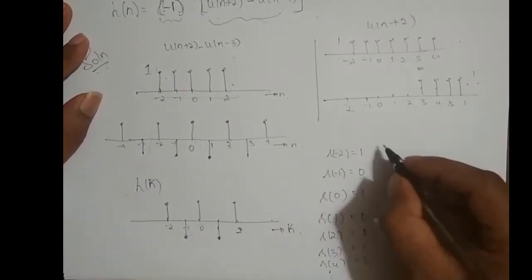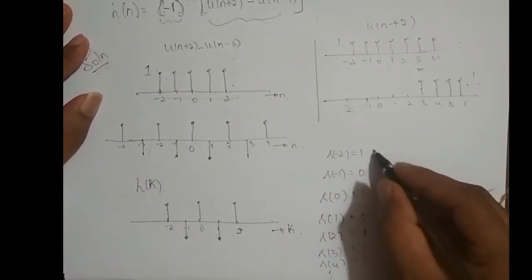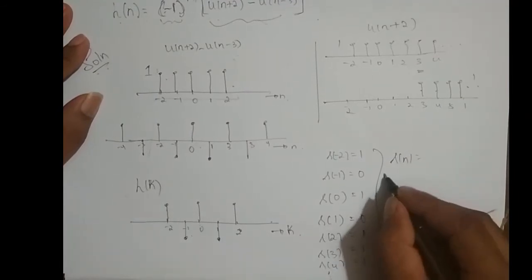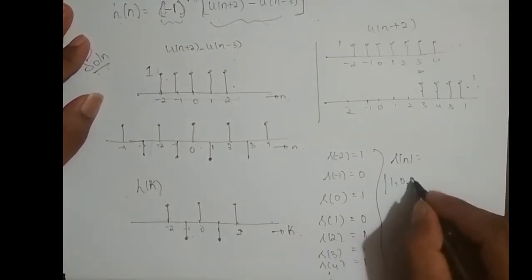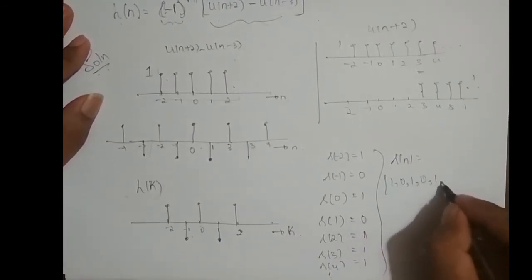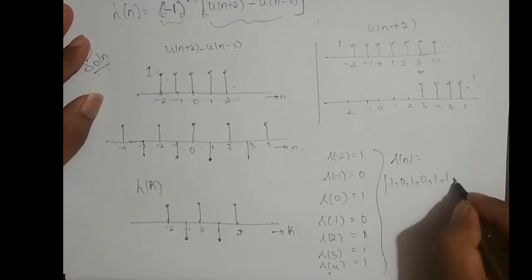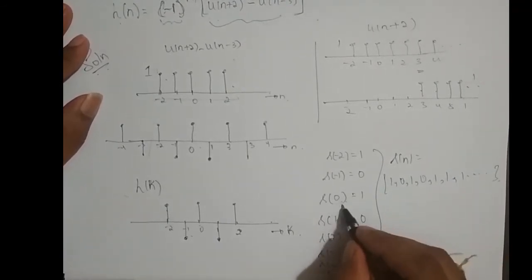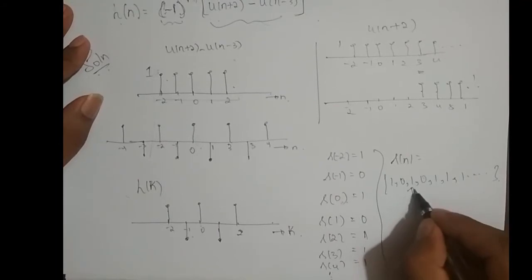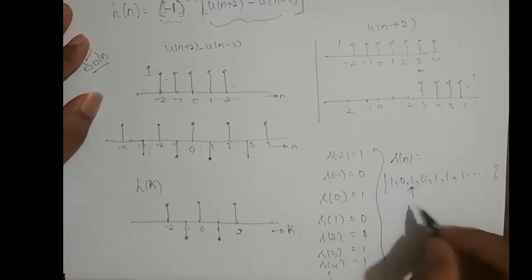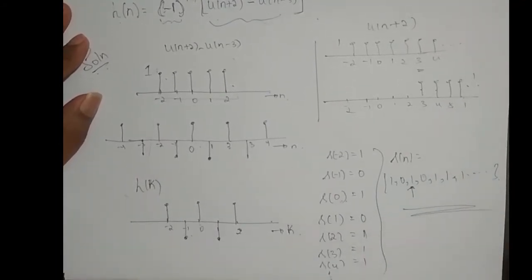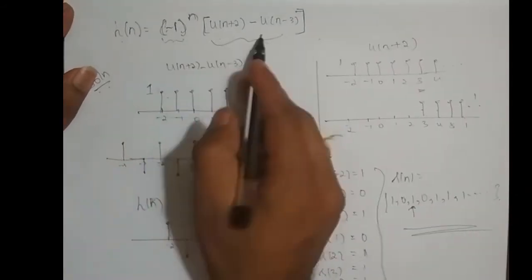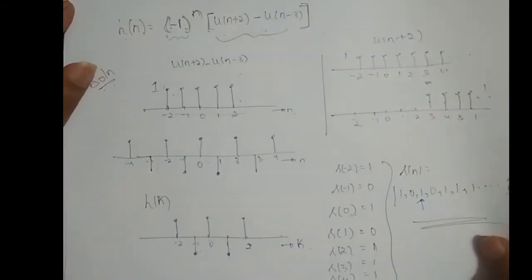So this is the step response. s of n can be written as: 1, 0, 1, 0, 1, 1, 1, 1, dot dot dot, where the origin is at n equal to 0. This is the step response of the system h of n.